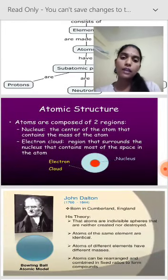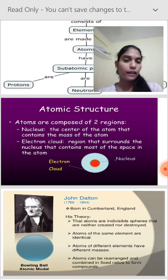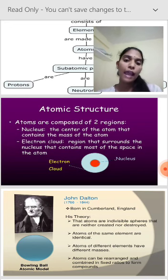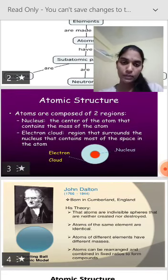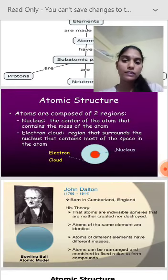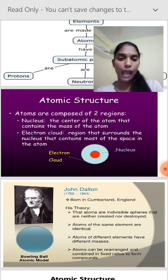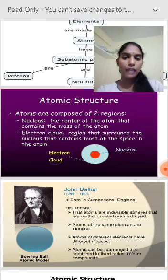Atoms are composed of two regions: the first one is the nucleus and the second one is the electron cloud. What is the nucleus? The nucleus is the center of the atom that contains the mass of the atom.